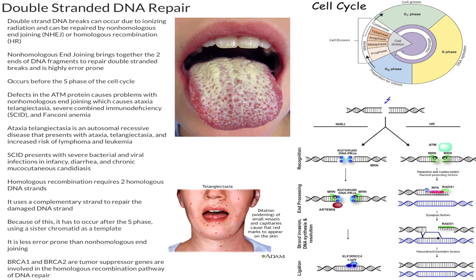Double-stranded breaks can occur due to ionizing radiation, and there are two ways that you can repair this. One is with non-homologous end-joining, the other way is by homologous recombination, and as you'll see one is a lot better than the other.